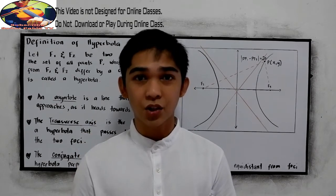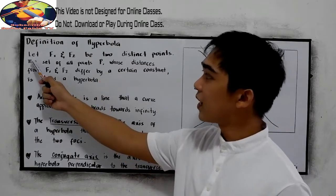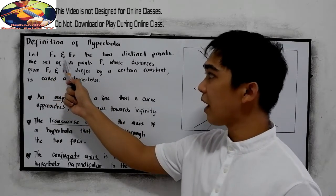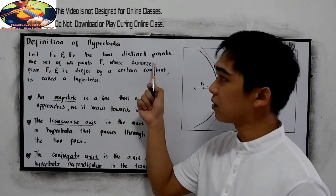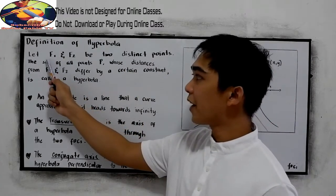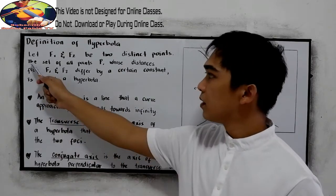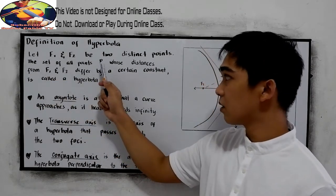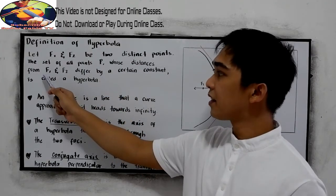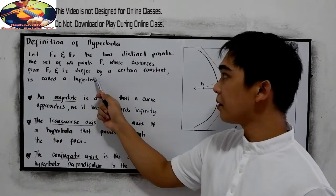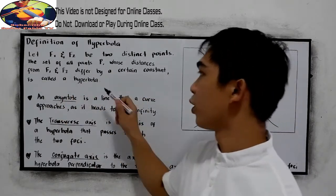So let's have the definition first. A hyperbola: Let f sub 1 and f sub 2 be two distinct points. So f sub 1 and f sub 2 are our foci. The set of all points, let's say P, whose distances from f sub 1 and f sub 2 differ by a certain constant, is called a hyperbola.